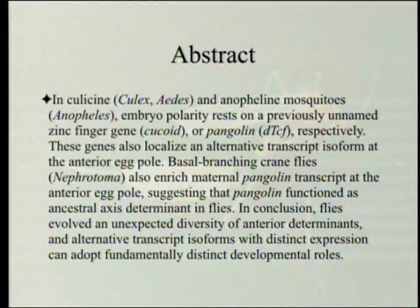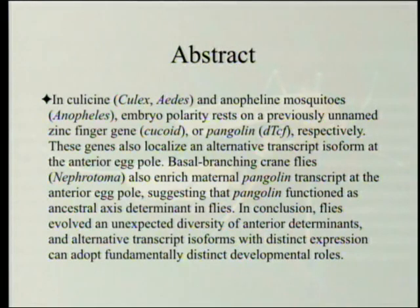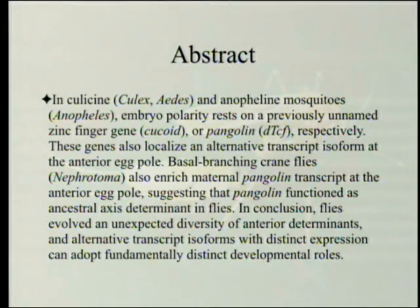In Culicine — that is Culex and Aedes — and Anopheline mosquitoes, two different major clades, embryo polarity rests on a previously unnamed zinc finger gene, or Pangolin, respectively. These genes also localize an alternative transcript isoform at the anterior egg pole. Basal branching crane flies also enrich maternal Pangolin transcript at the anterior egg pole, suggesting that Pangolin functioned as the ancestral axis determinant in flies. In conclusion, flies evolved an unexpected diversity of anterior determinants.